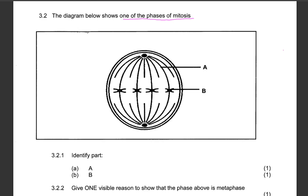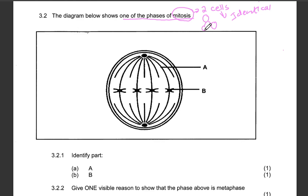The diagram below shows one of the phases of mitosis. Remember, mitosis is a cell division process whereby one cell divides to form two cells, and these two cells are going to be genetically identical to each other and also to the parent cell. So if the parent cell has four chromosomes, each daughter cell will also have four chromosomes.